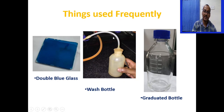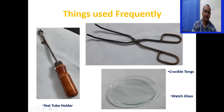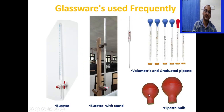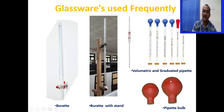The wash bottle is used to wash different types of glassware and make up the volume. The graduated bottle can hold up to 800 ml. The test tube holder is used to hold and heat test tubes. The crucible tong is used to hold hot items like crucibles. The watch glass is also commonly used. The burette has a maximum capacity of 50 ml, marked from 0 to 50 ml, and is fixed in a burette stand. The volumetric pipette comes in different sizes such as 25 ml and 10 ml. Graduated pipettes also come in sizes like 3 ml, 5 ml, and 10 ml. Pipette bulbs are used to draw up different solutions.